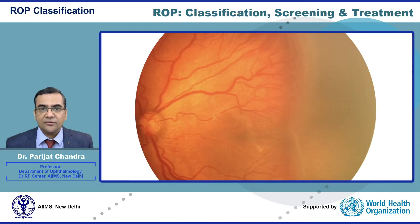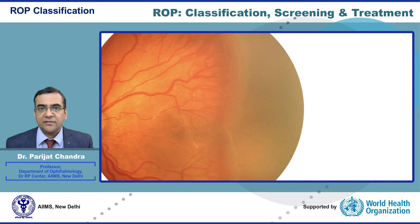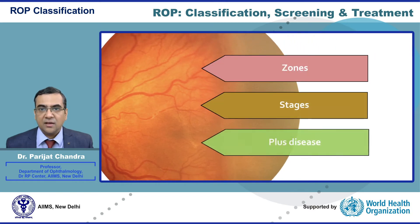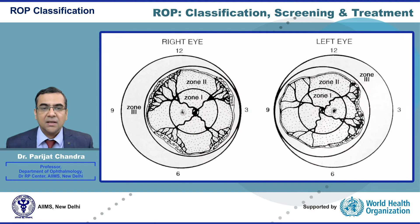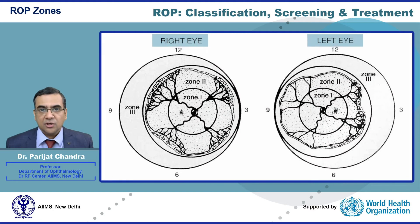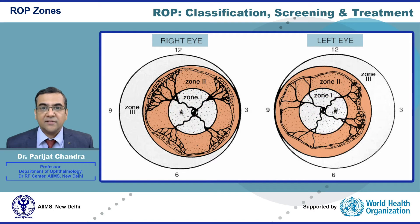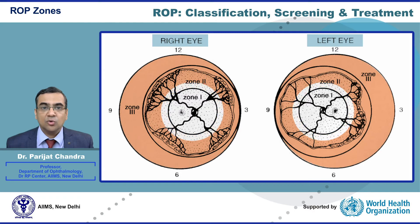The international classification of ROP classifies ROP into zones and stages with or without plus disease. There are three zones. Zone 1 is the innermost zone with a radius twice the disc-macular distance. It has the most severe disease because only a small area of the retina is vascularized. Zone 2's radius extends to the nasal ora serrata. Zone 3 is the outermost zone and has the least severe disease.